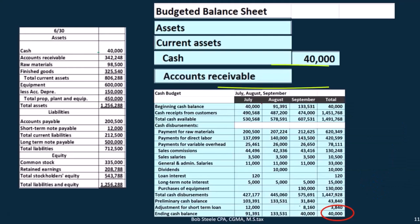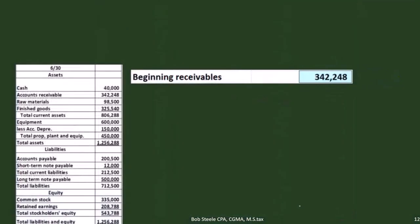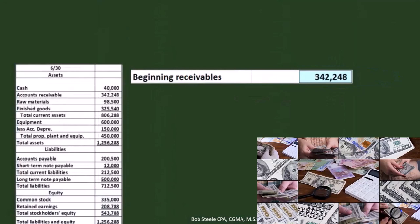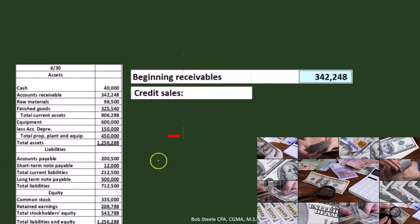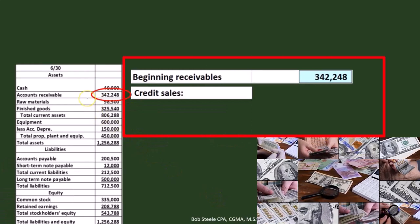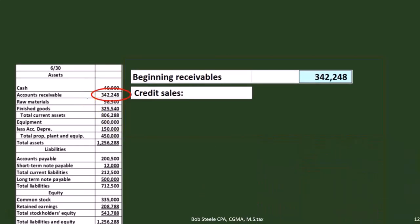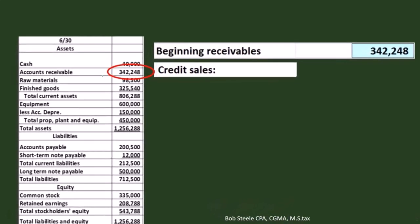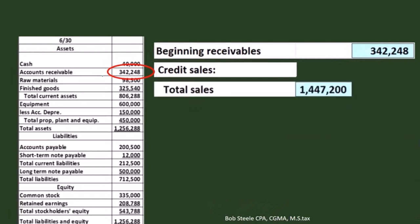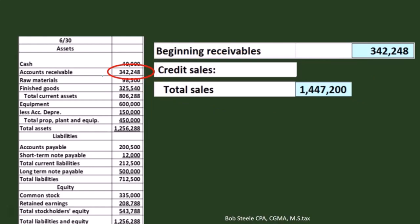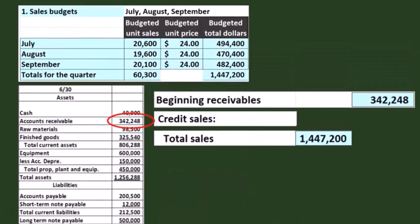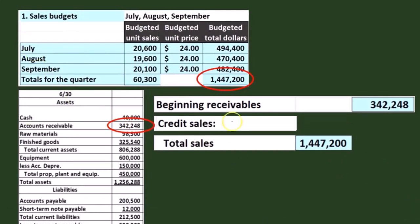Then we have accounts receivable. We're going to have to do a calculation to figure out the ending balance in accounts receivable. We take the beginning receivable, which comes from last period's accounts receivable on the balance sheet at $342,248. Then we add the credit sales. The problem states we have $1,447,200 in total sales from the sales budget, and 70% of that was on account — those are sales that increase accounts receivable.